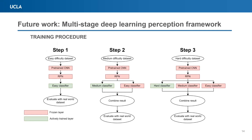The training procedure for our framework is shown in the image below. First, the architecture will only have an easy classifier being trained on the easy difficulty dataset. Only the weights of the easy classifier are being modified in step 1. The pre-trained CNN and the RPN layer are frozen. The goal of this step is to allow the easy classifier to learn the core basic concepts of object recognition without the effect of occlusion, small size, or crowdedness.